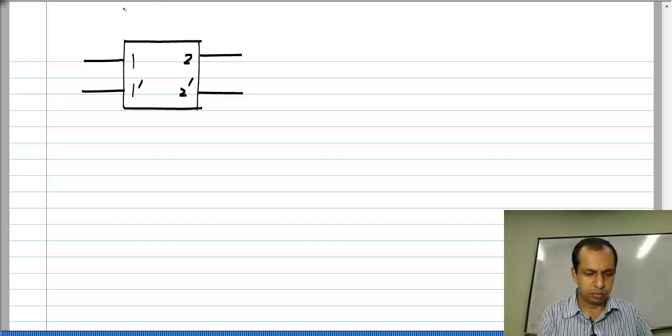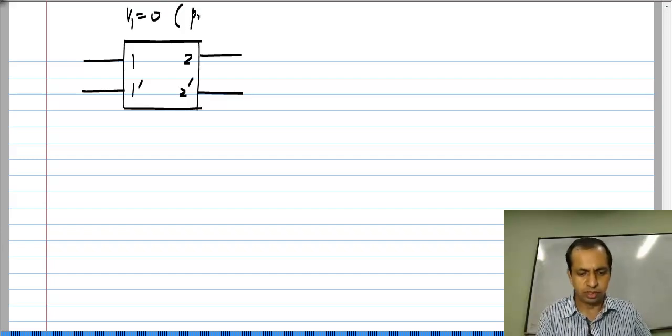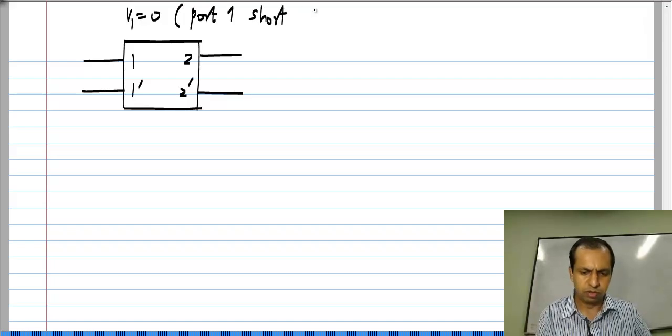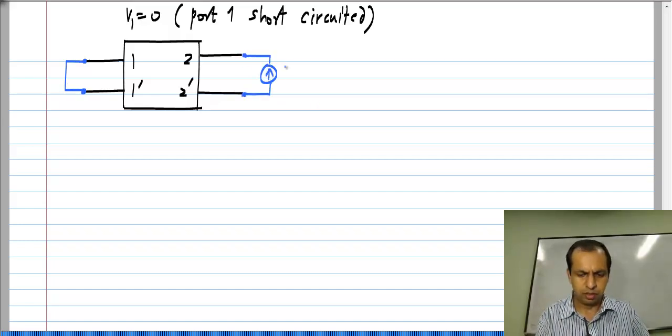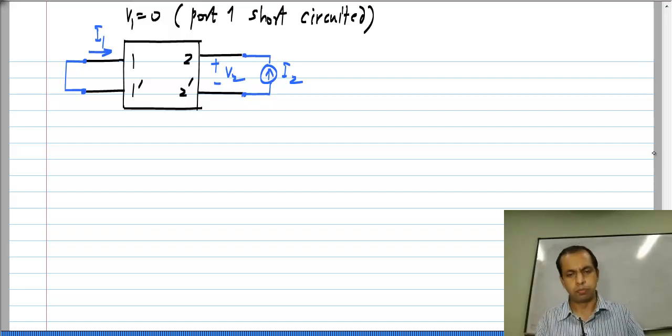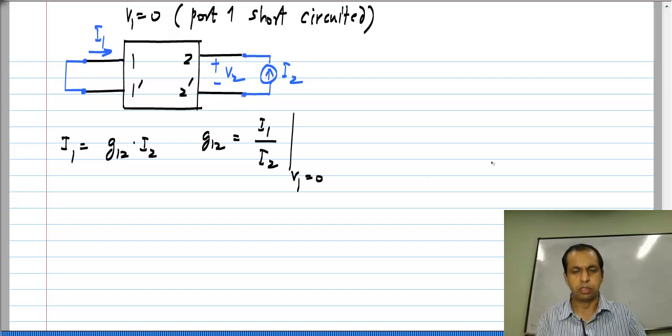Now, for the other set of measurements we set V1 to 0. So, that is port 1 short circuited, and we apply a current I2 to port 2. With that port we measure I1 and V2. In this case I1 will be G12 times I2, or G12 is I1 by I2 with port 1 short circuited.